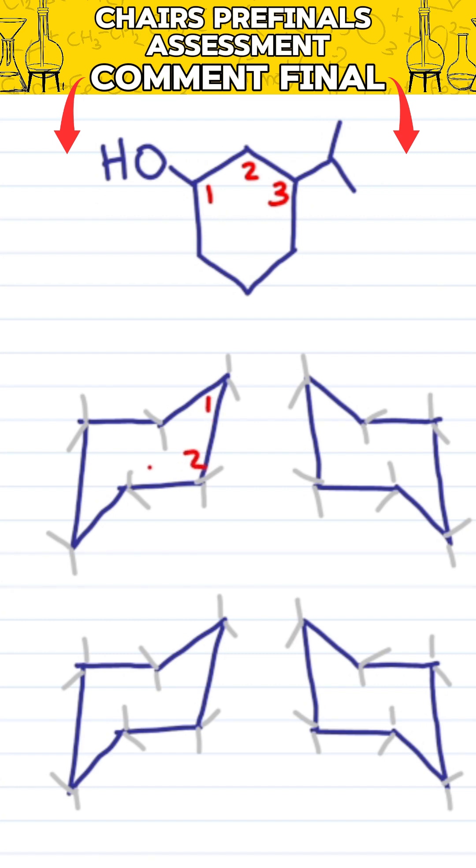Make sure to keep it clockwise, one for cis, one for trans. Grab your tip and drag it down for the ring flip, making this number one.